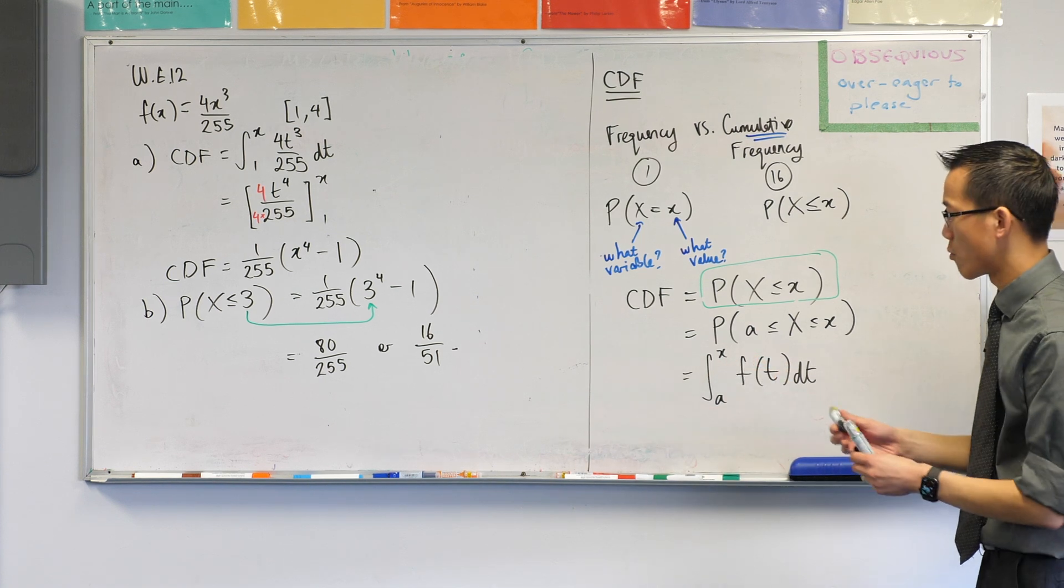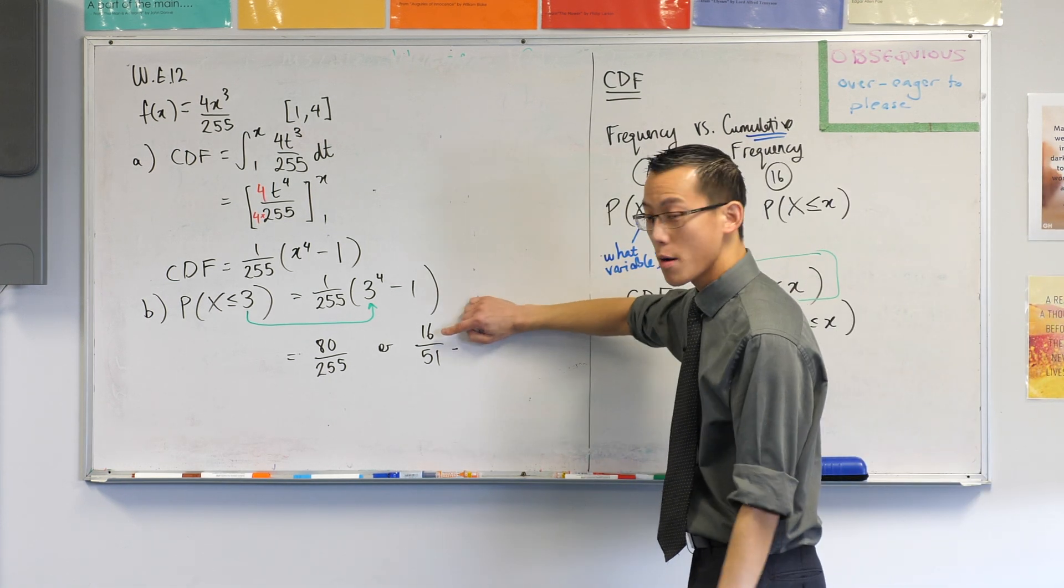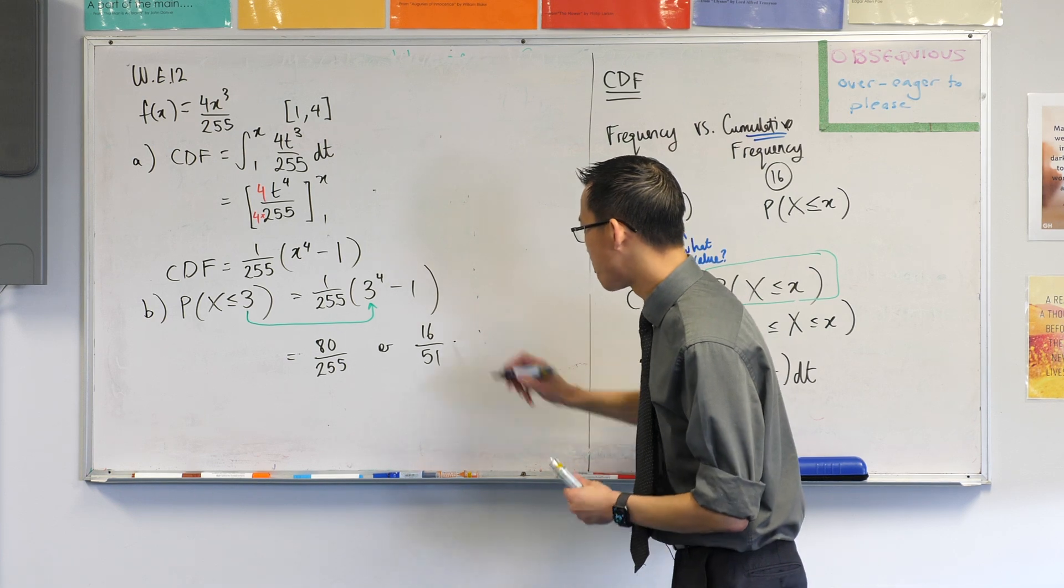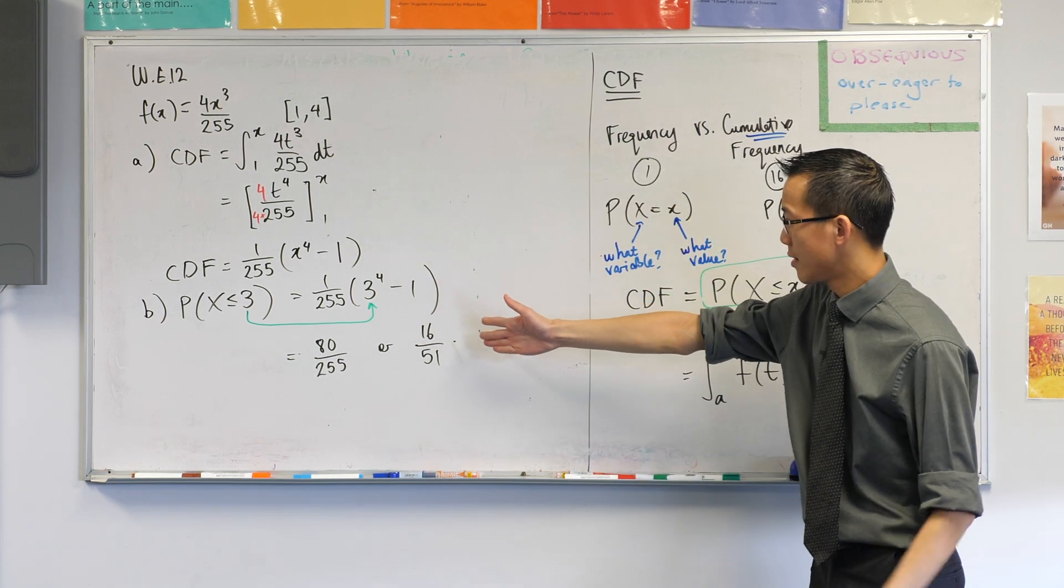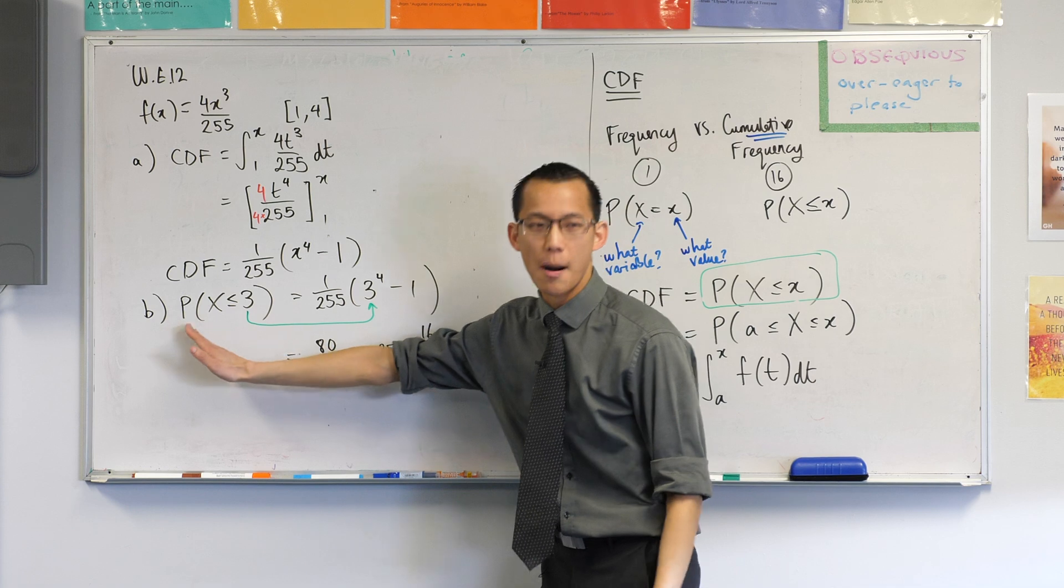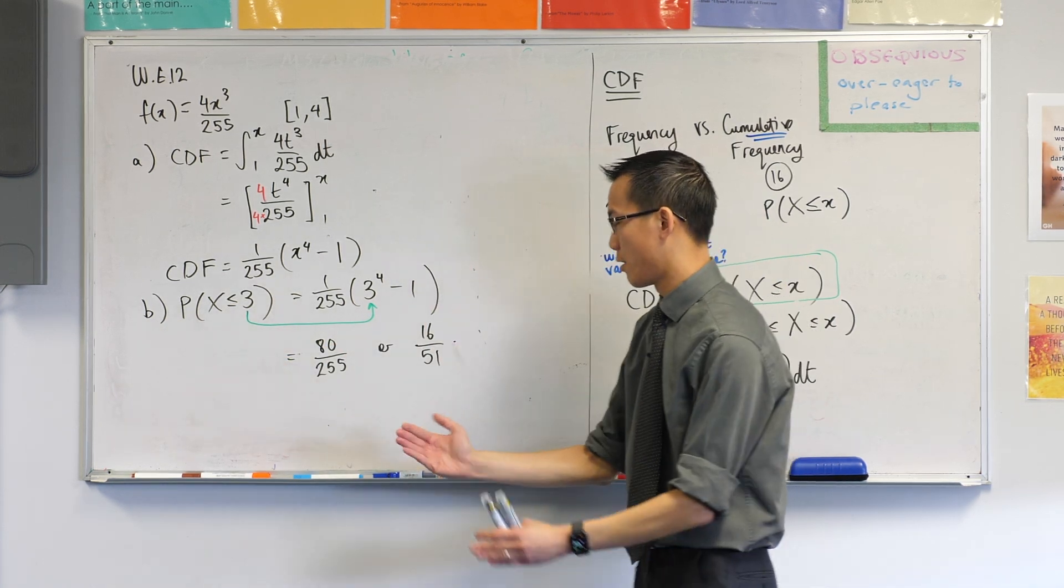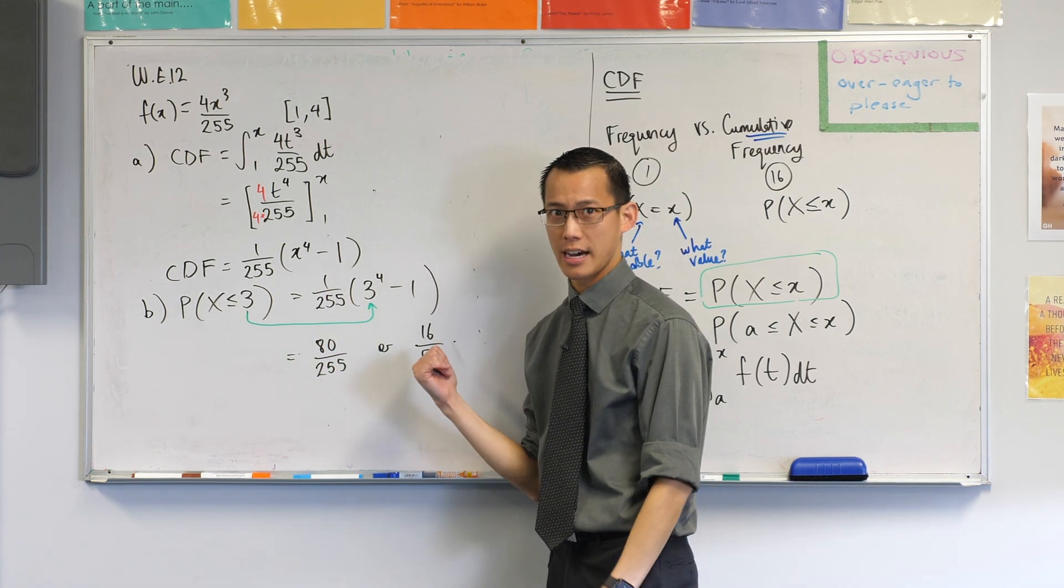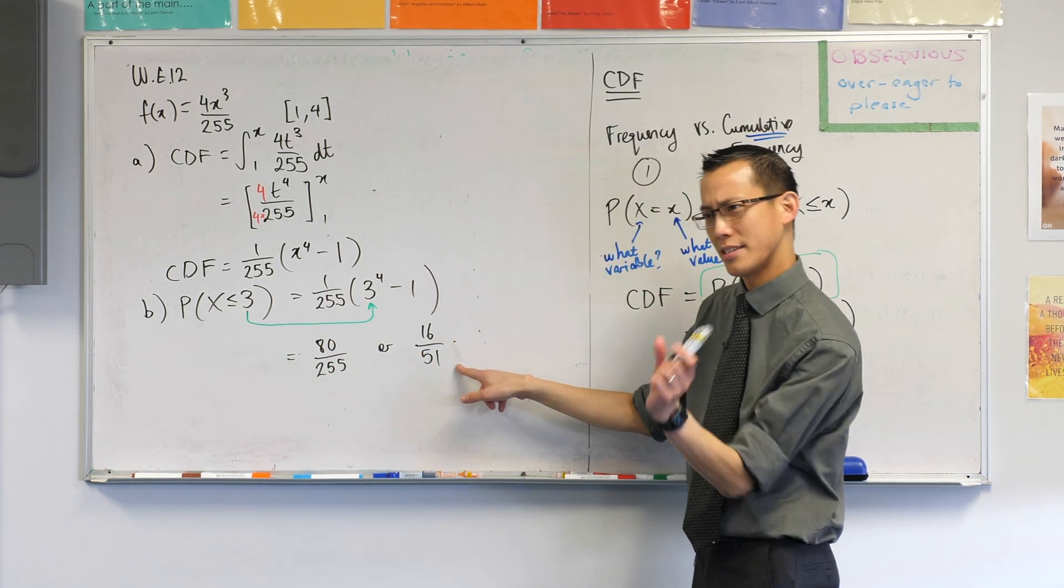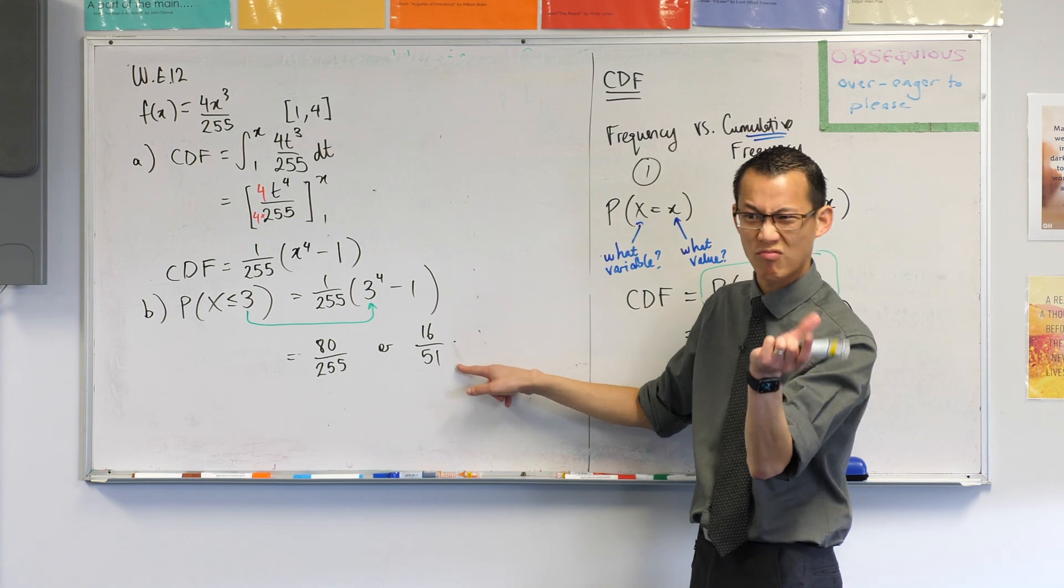So what does this mean? This is the probability of everything up to and including 3. So you know how I'm defined from 1 to 4? So from 1 to 3, this is the probability. I guess this is not very probable. I guess there's more probability on the 3 to 4 section. Does that make sense?